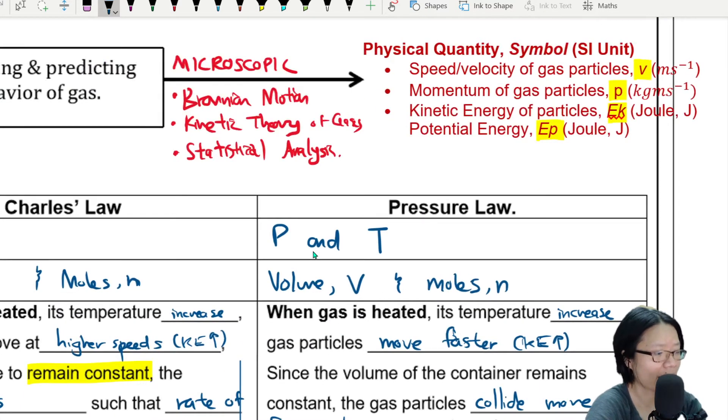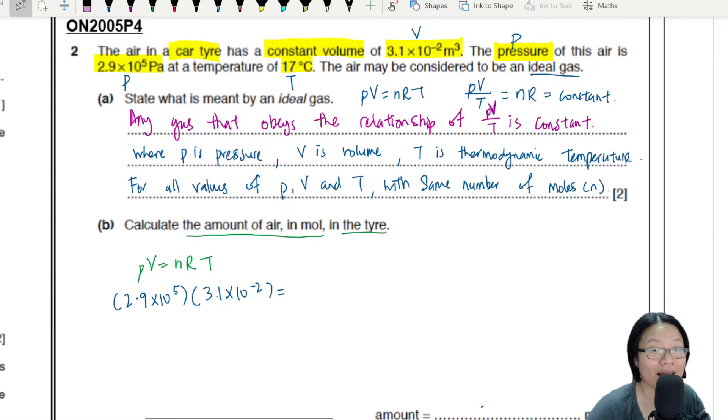...n, and we are looking for the number of moles n. You can plug in the universal gas constant - constant all over the place - 8.31, can find in page 2 in your exam paper. And finally, temperature.